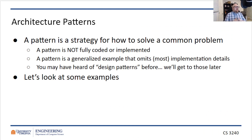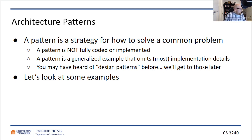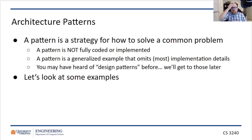An architectural pattern is a strategy for how to solve a common problem. It is not a fully coded or implemented system. Rather, it is an idea — a pattern that omits the implementation details. It's intentionally vague, because you think of the pattern as the idea that you implement. There are also design patterns for how we organize specific components or features, and we're going to definitely talk a lot about design patterns. But architectural patterns are just broad organizational structures for the system.